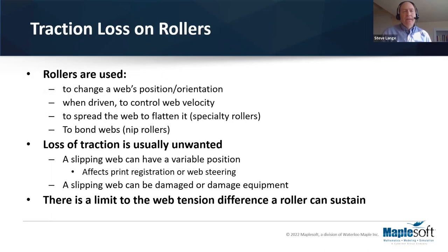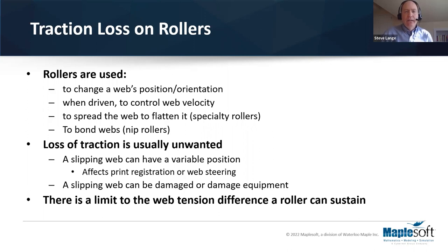Speaking about traction loss on rollers: why are rollers used in web handling systems? Obviously, to get the web from point A to point B — usually involving changing its position in space or its orientation. The whole goal is to get it to these money-making transformational steps in a process without damaging it. For driven rollers, where a drive is connected through belts and pulleys, it's to control the web's velocity and indirectly its tension and position in the machine direction.